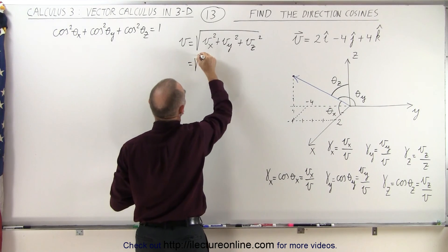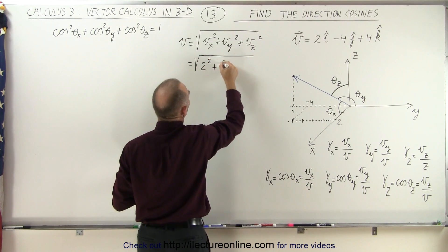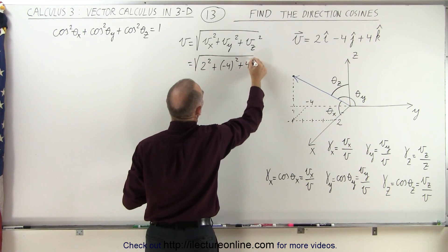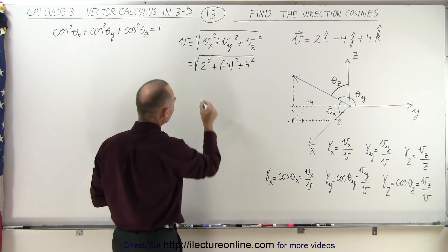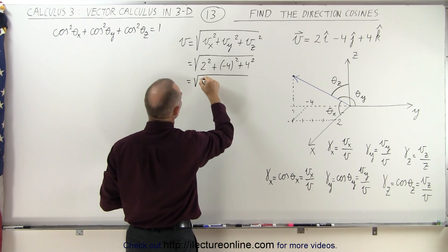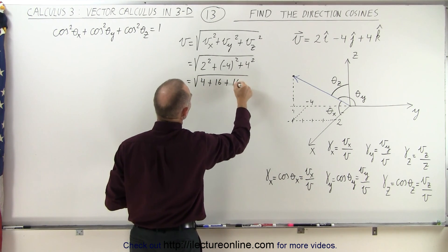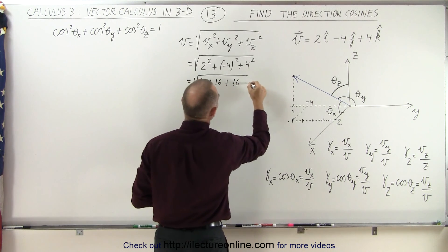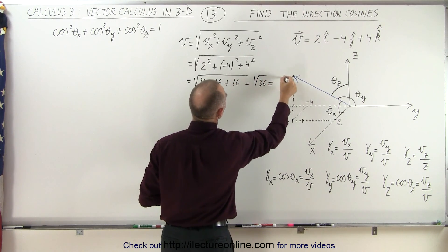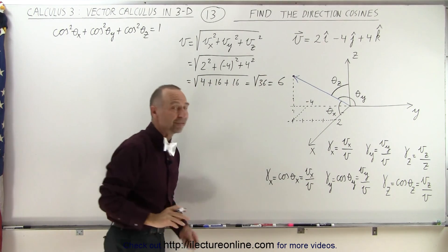This is equal to the square root of 2 squared plus negative 4 squared plus 4 squared, which equals the square root of 4 plus 16 plus 16. That's the square root of 36, which equals 6. So the magnitude of vector v is 6.